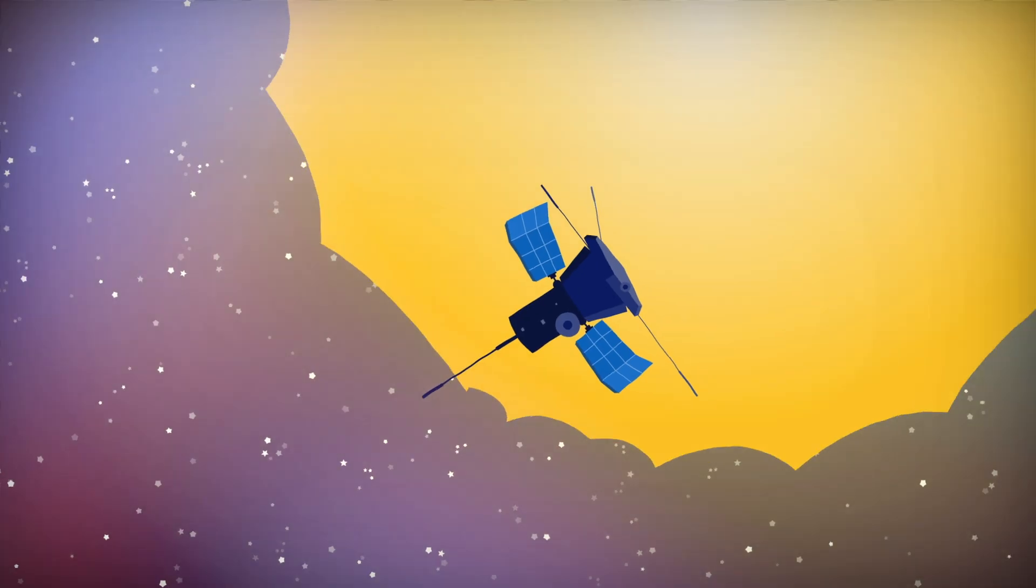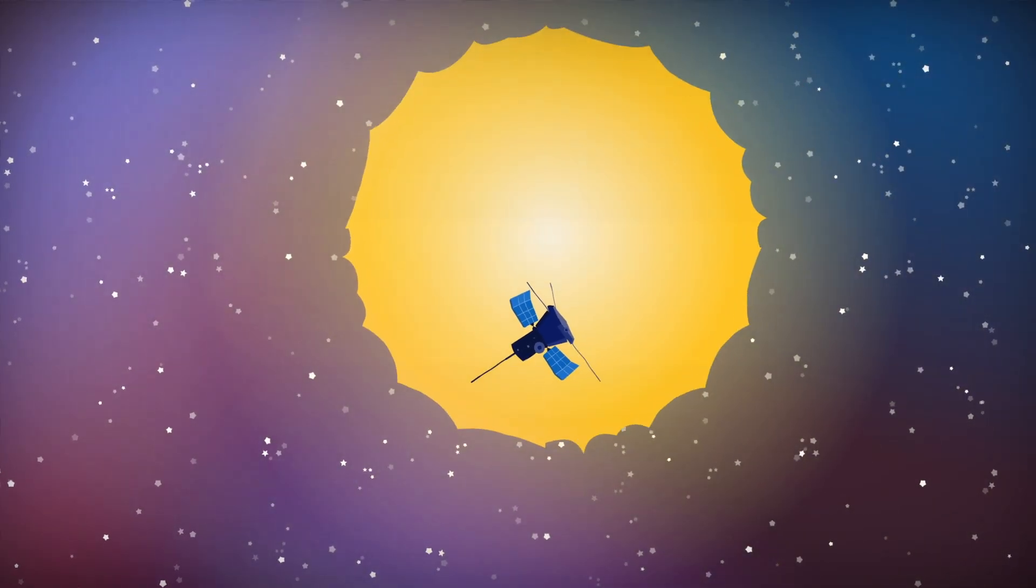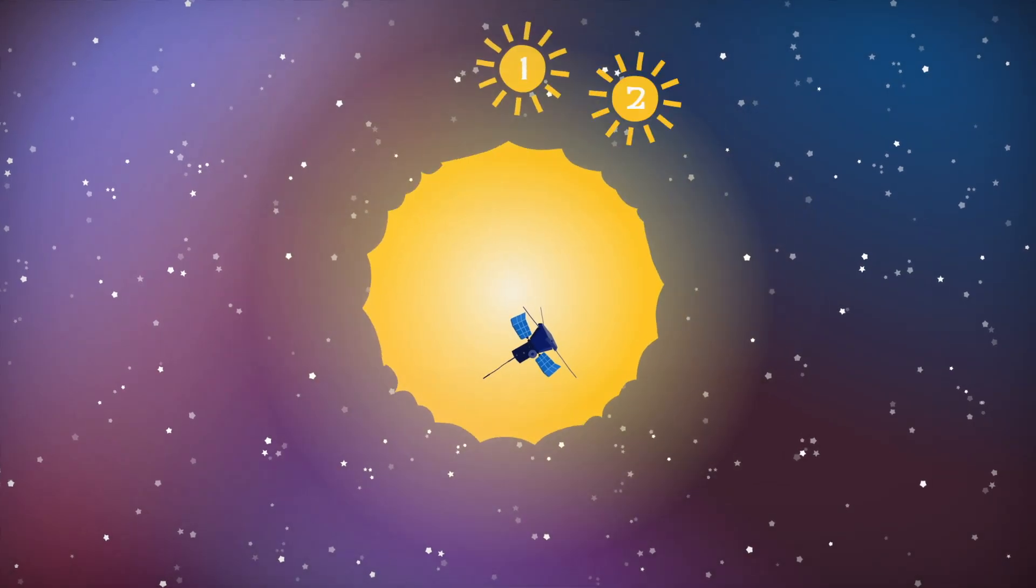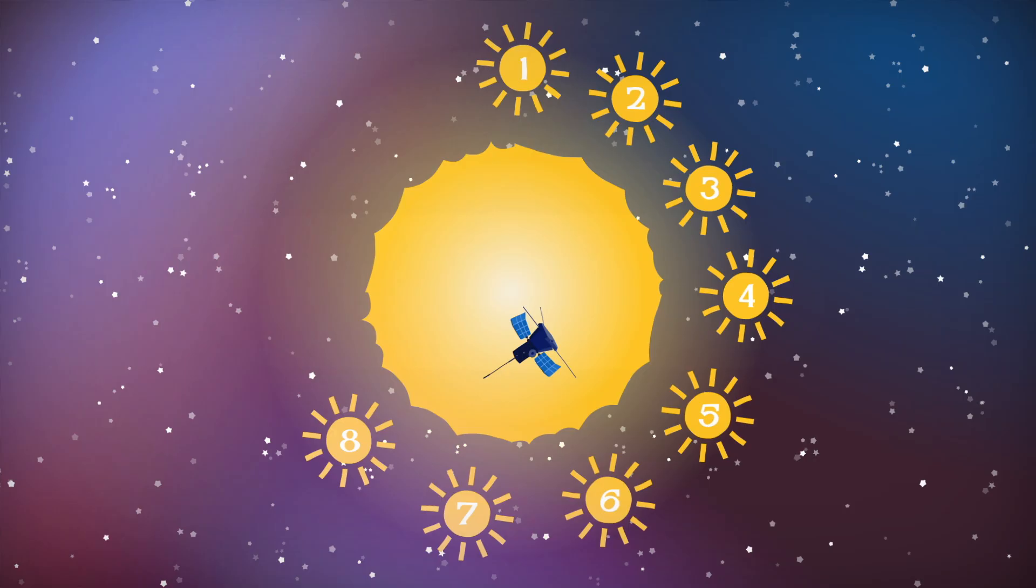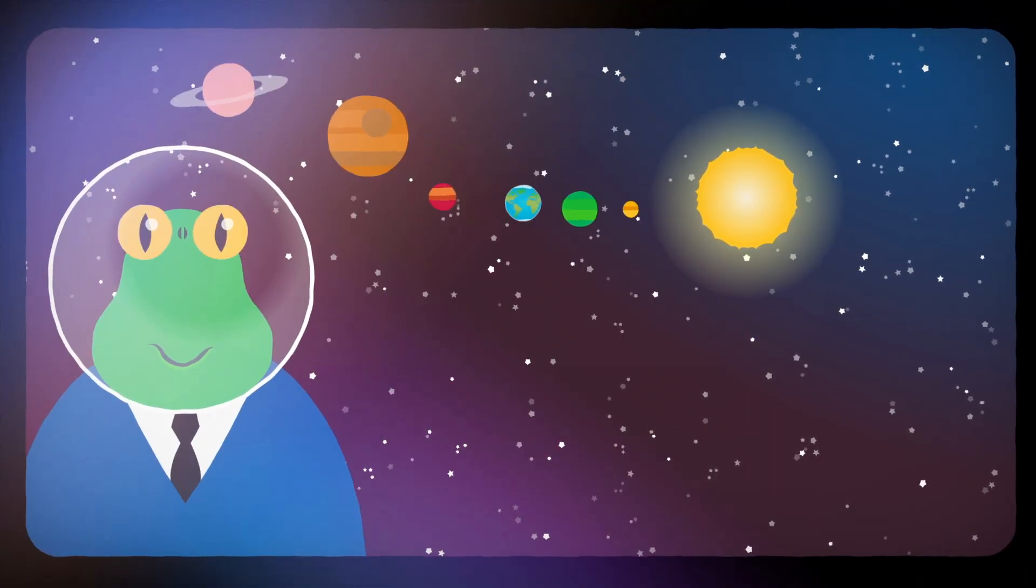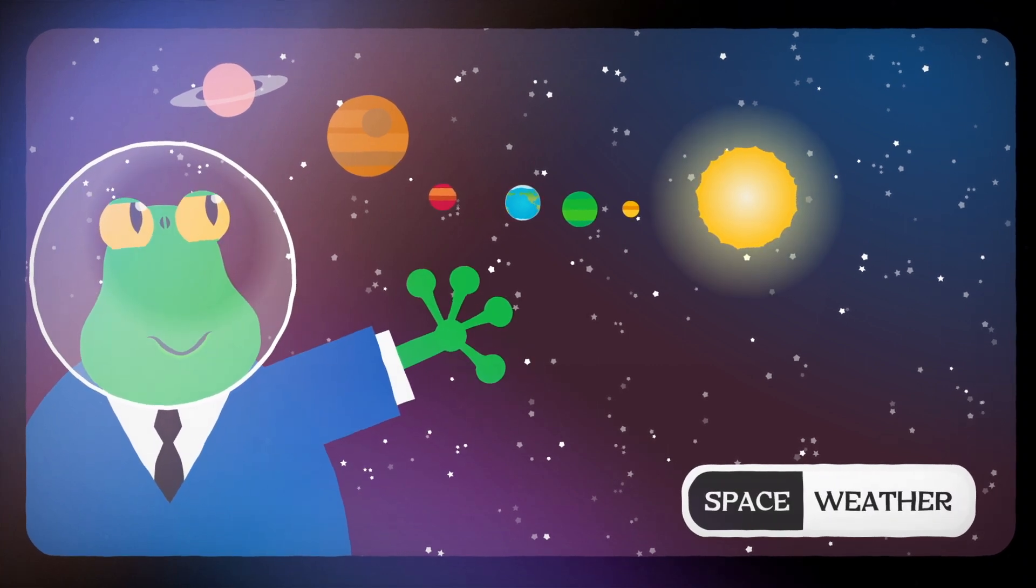Fortunately, we're not defenseless. After centuries of observing sunspots, researchers have learned the sun's usual magnetic activity follows an 11-year cycle, giving us a window into when solar storms are most likely to occur. And as our ability to forecast space weather has improved, so have our mitigation measures.